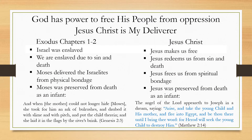God is using symbolism here to help us understand that he has the power to free his people from oppression. That person is really Jesus Christ, who is our deliverer. Looking at Exodus chapters 1 and 2 and comparing with the role of Jesus Christ is remarkable. Israel was enslaved — Jesus makes us free. We are enslaved due to sin and death — Jesus redeems us from sin and death. Moses delivered the Israelites from physical bondage — Jesus frees us from spiritual bondage.